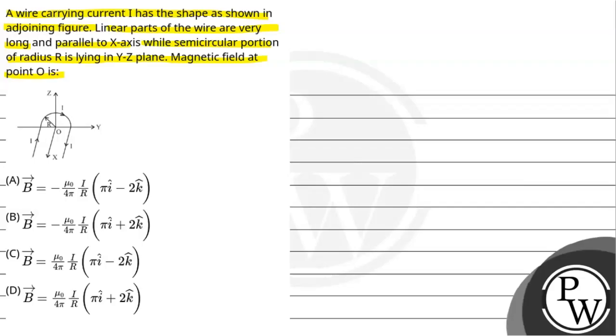So in the diagram you can see there is a wire. It has two linear parts and one circular part. The circular part is in the y-z plane. The remaining linear parts are parallel to x-axis. So we need to find the magnetic field at this point O, which is basically the center point.